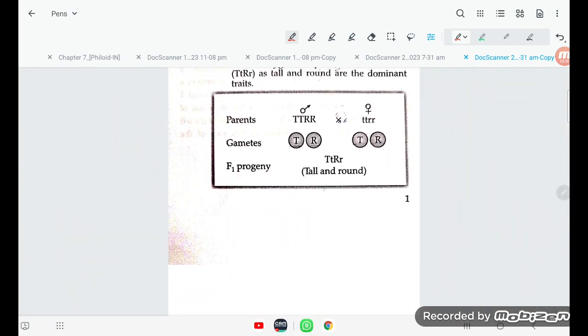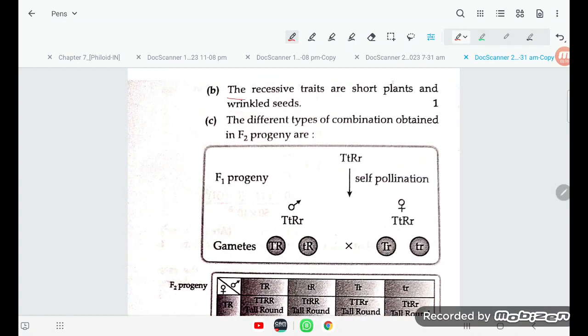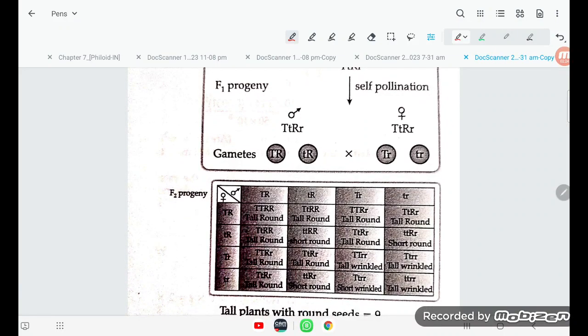Here you see capital T, small t, capital R, small r - tall and round are formed. The recessive traits are short plant and wrinkled seed. What are the different types of combinations obtained in F2 generation?